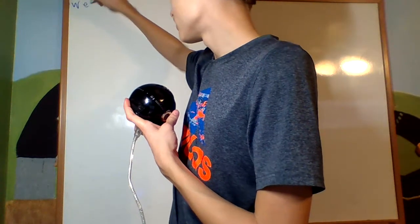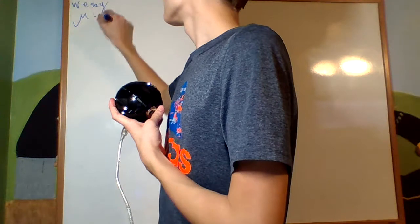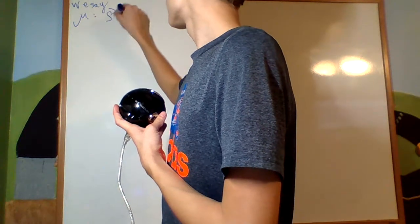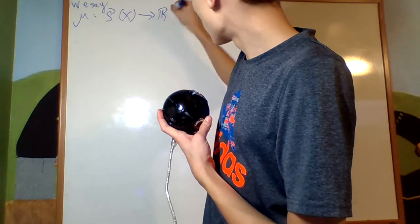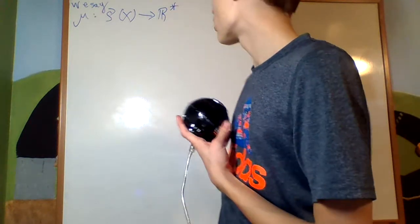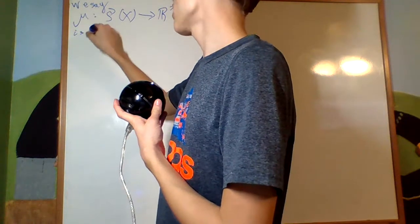We say mu that takes in any subset of a space X outputs either R, a real number, or infinity, is an outer measure.